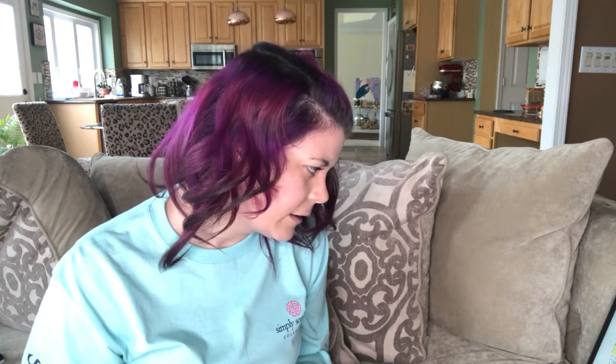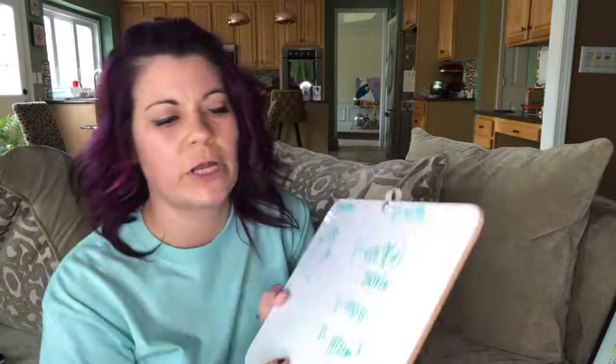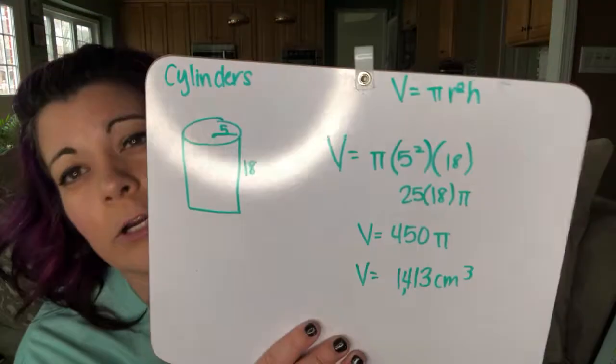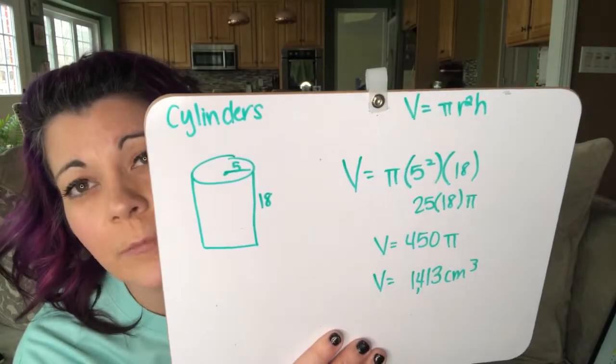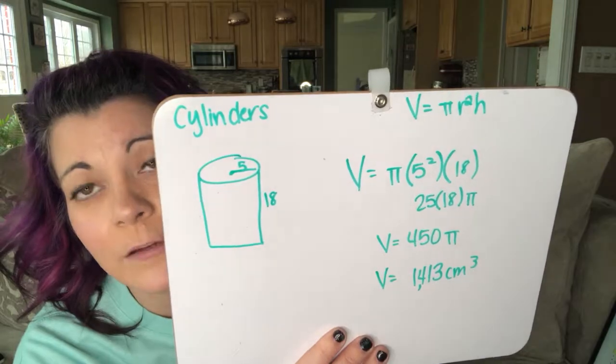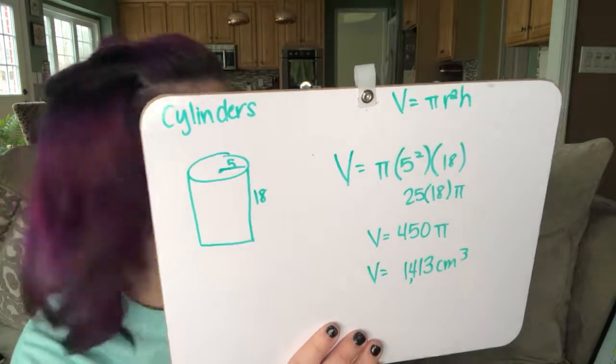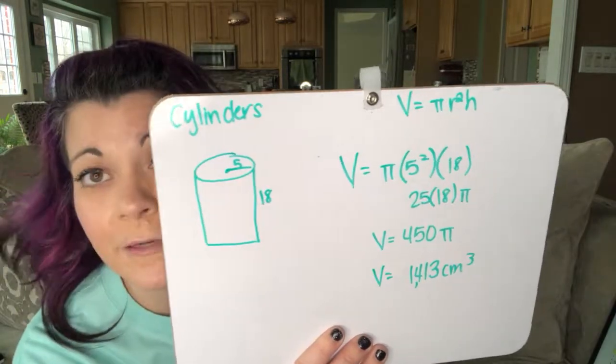And you get 1,413 centimeters cubed because volume is in cubed units. And that is how you find volume of a cylinder. Thank you for watching this video. Bye bye.